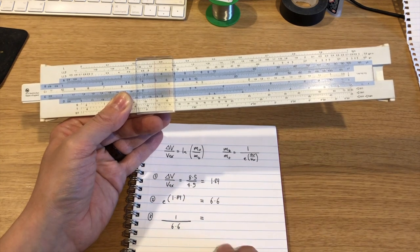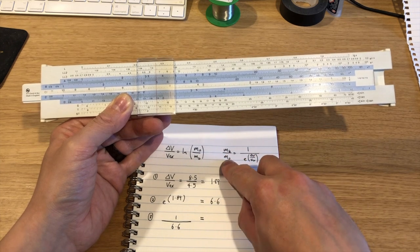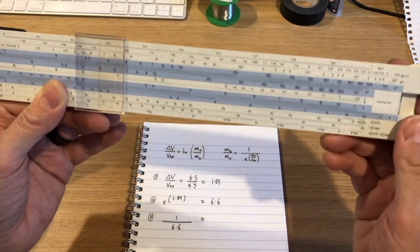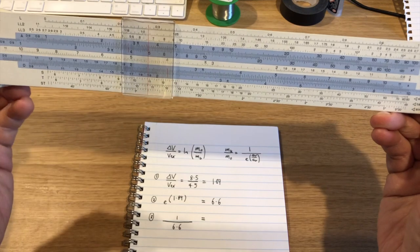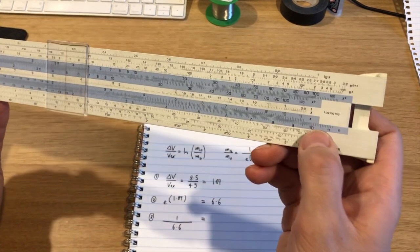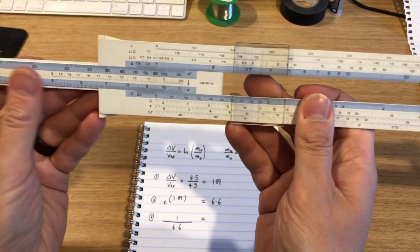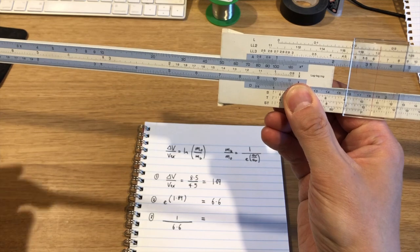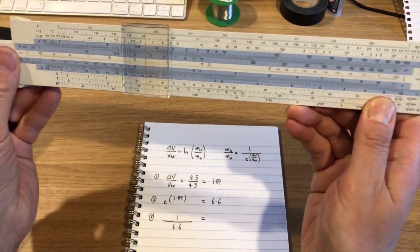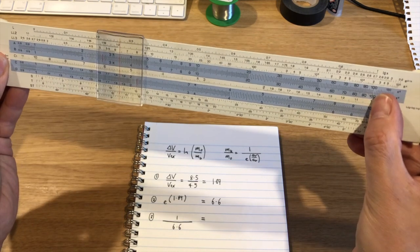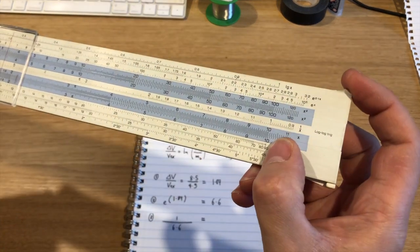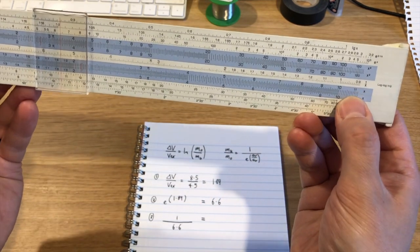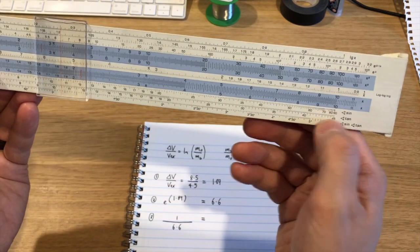So 1 divided by 6.6 is our answer to this thing here, what's the burnout mass fraction. So what I can do now is what I'd normally do, I'm trying to divide 1 by something. So I would take my 1 here on the division column, and I'd move it so it lines up with 1. The trouble here is that I've run out of slide rule in this direction. So what I'll do instead is if I line this thing up so that the 1 here is lined up with 10,